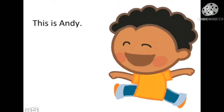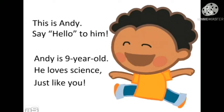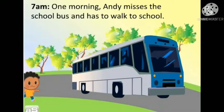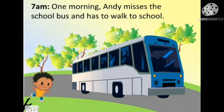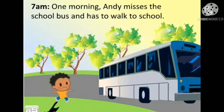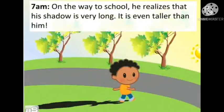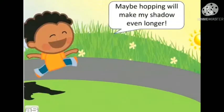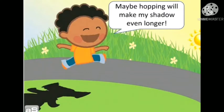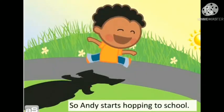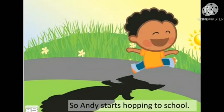This is Andy. Say hello to him. Andy is 9 years old. He loves science just like you. One morning, Andy misses the school bus and has to walk to school. On the way to school, he realizes that his shadow is very long — it is even taller than him. Maybe hopping will make my shadow even longer. So Andy starts hopping to school.